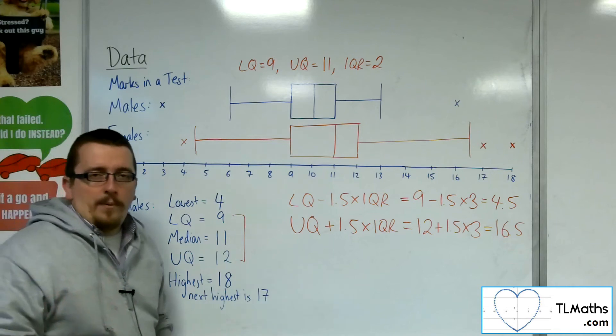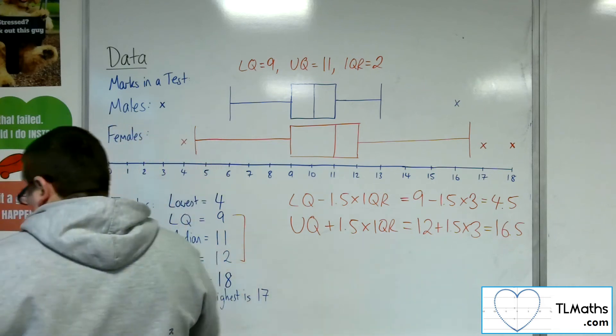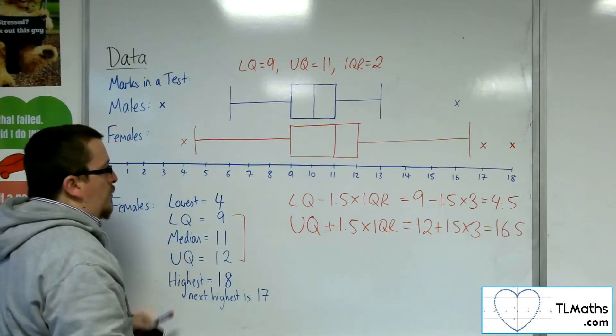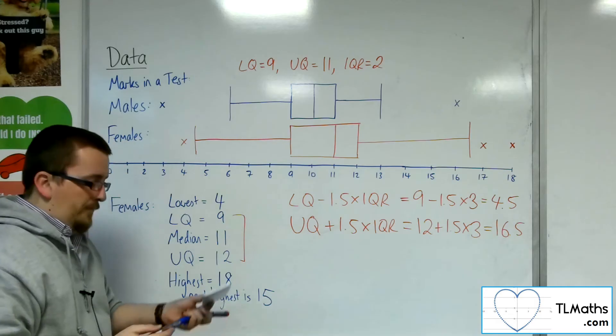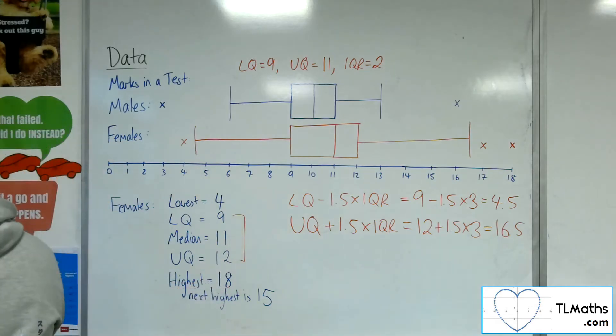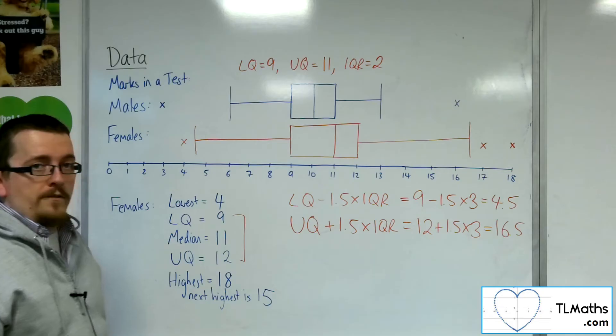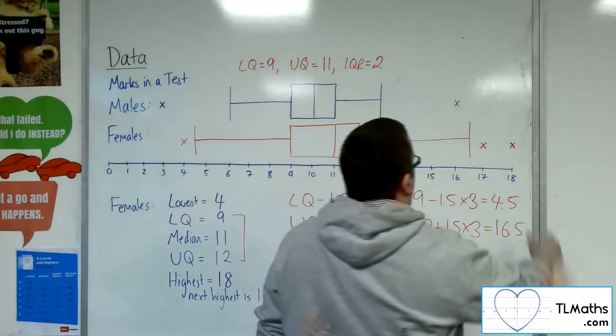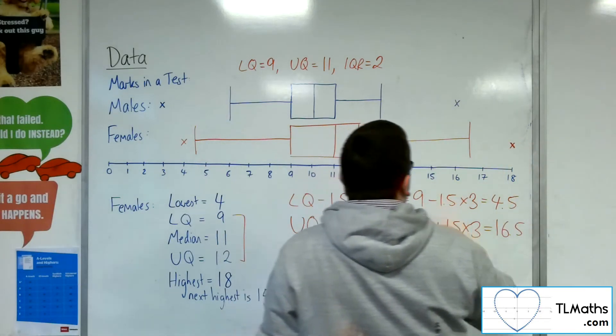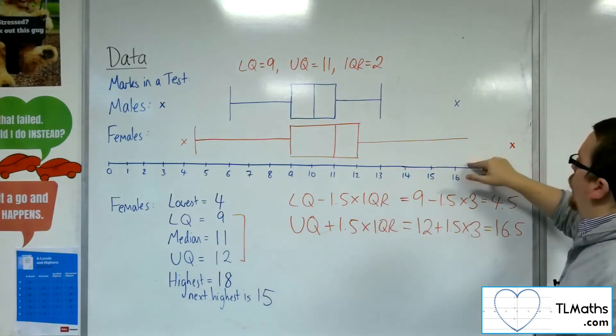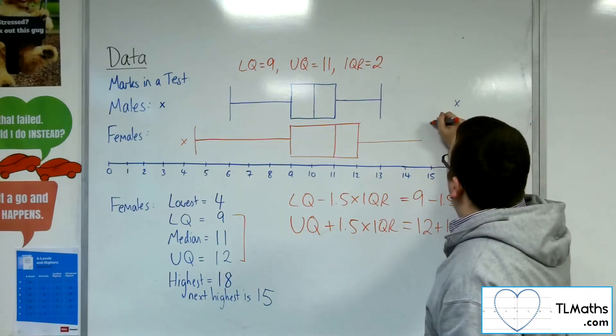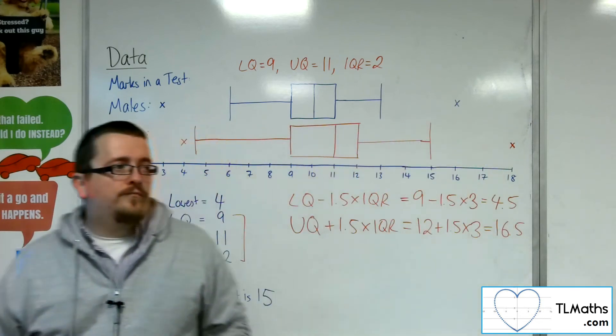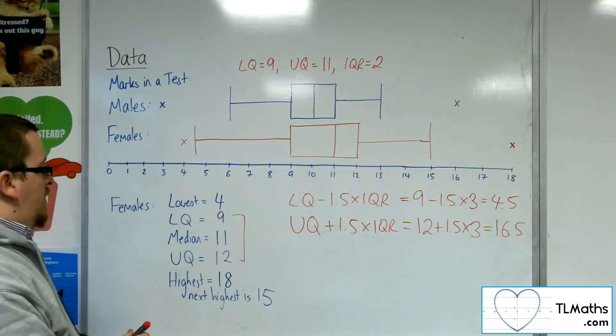So let me show you what would happen if I slightly change the problem, so that now I know that the next highest isn't 17, it's 15. Now 15 isn't larger than the 16.5. So it's scrubbed off as an outlier, but so is the whisker. Because now I go down to the next lowest that I am aware of that isn't an outlier. And so I would go to 15.